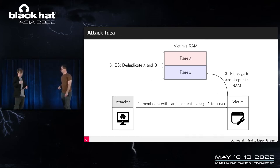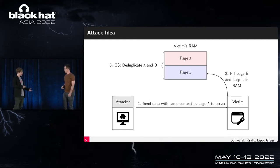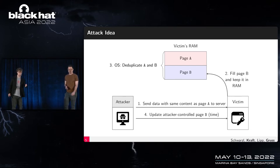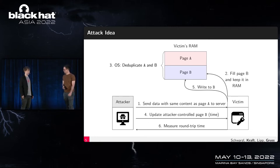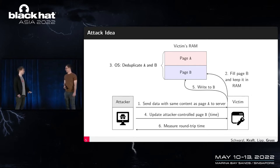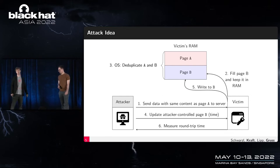If the attacker can also overwrite the same page through an update operation — which many web APIs offer — they will see a timing difference. The victim writes to page B again, updating it, and this triggers copy-on-write which can be measured by the attacker. Yes, there's network noise, but you repeat the measurement more often. However, this cannot work over the internet at a realistic scale — the difference is at the nanosecond scale.